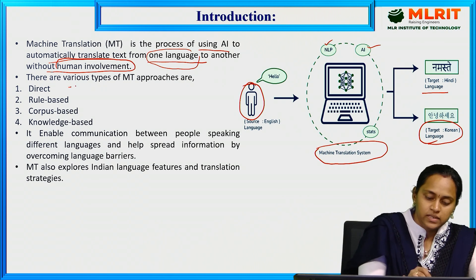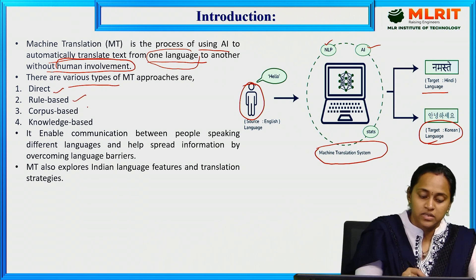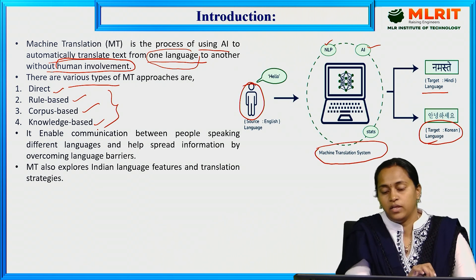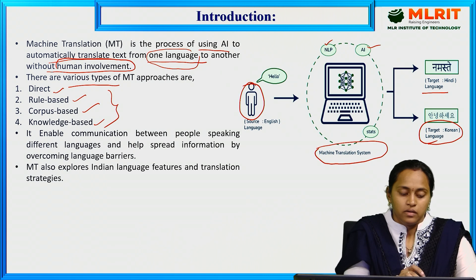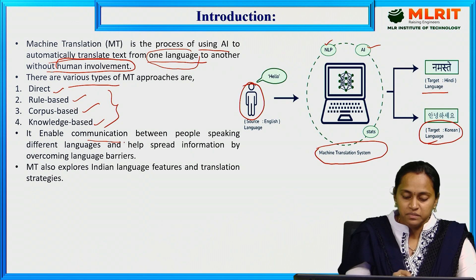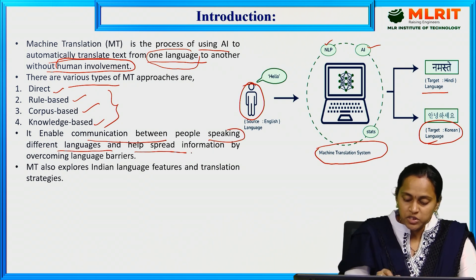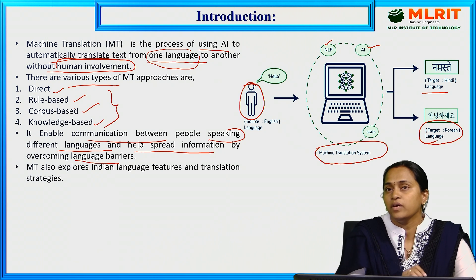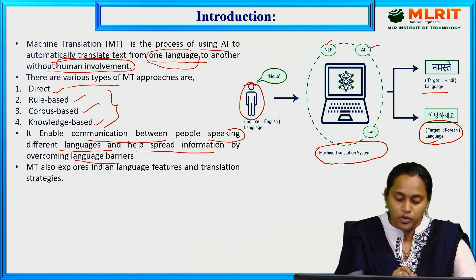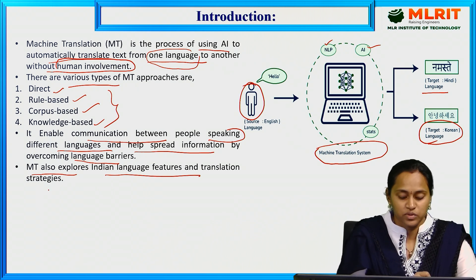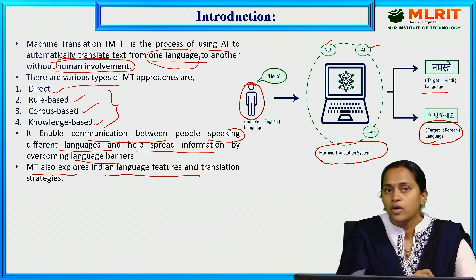There are various types of machine translation systems: direct machine translation, rule-based machine translation, corpus-based machine translation, and knowledge-based machine translation. These four types are very important techniques in machine translation, and we will discuss each one later. Machine translation enables communication between people speaking different languages and helps spread information by overcoming language barriers. It also explores Indian language features and translation strategies.